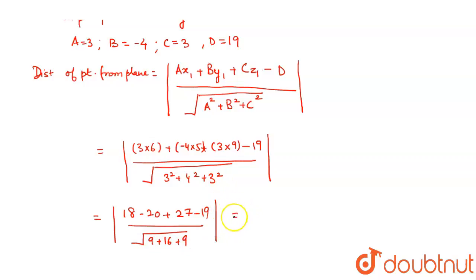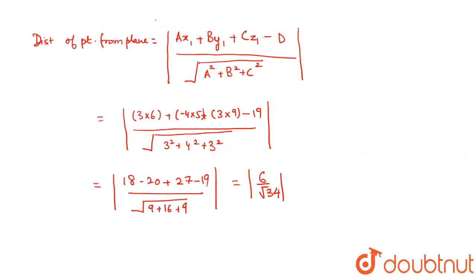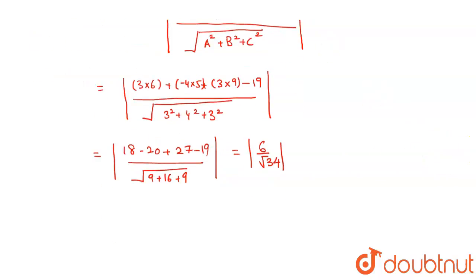It's |18-20+27-19|/√(9+16+9) in modulus. So, I get modulus 6/√34. So, I can rationalize it. What do I get after doing that? 6/√34 × √34/√34.